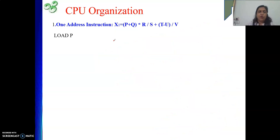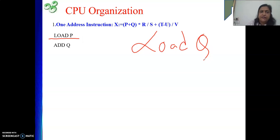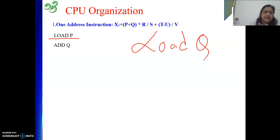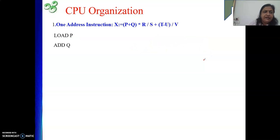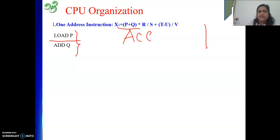Now we will do it for one-address instructions. We need to compute P + Q first. Load P, then ADD Q — one of the operands is part of the instruction. Do not write LOAD P then LOAD Q, because loading Q would overwrite P in the accumulator and P would be lost. So: LOAD P, then ADD Q. The result is in the accumulator, and we only have one accumulator, so be careful.